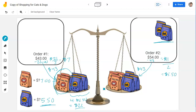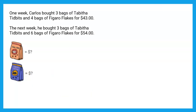Now let's look at how to do this with equations. Three bags of Tabitha Tidbits — an unknown, we'll call that T — and four bags of Figaro Flakes, another unknown, we'll call that F. The total is $43. So we set this up as: 3T + 4F = 43. The following week: 3T + 6F = 54. There is our system of equations: two equations and two variables.